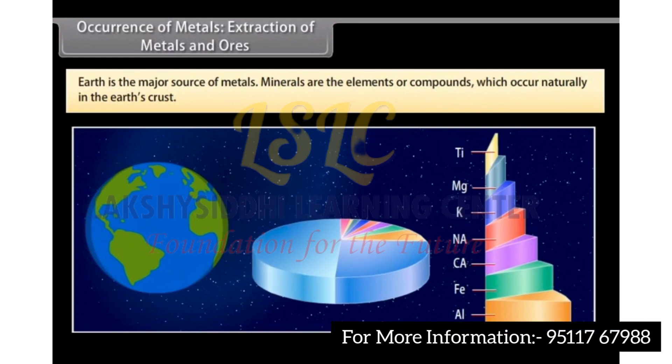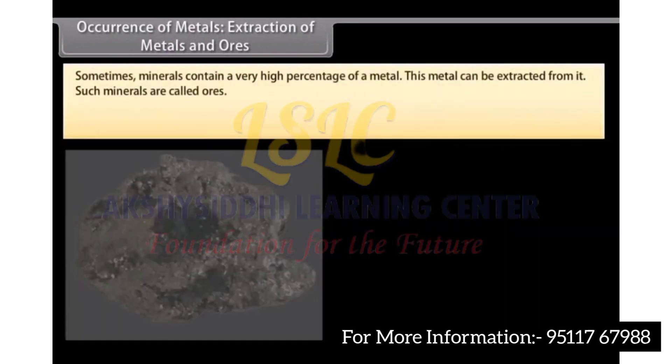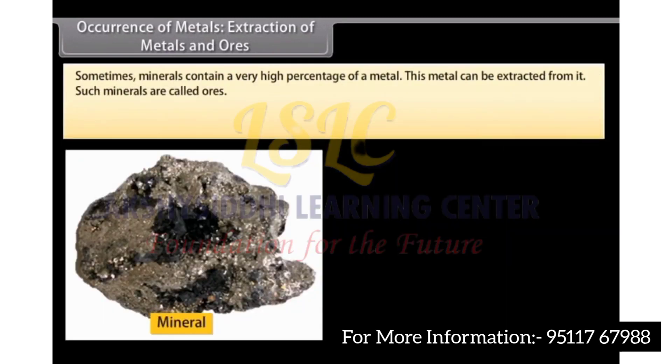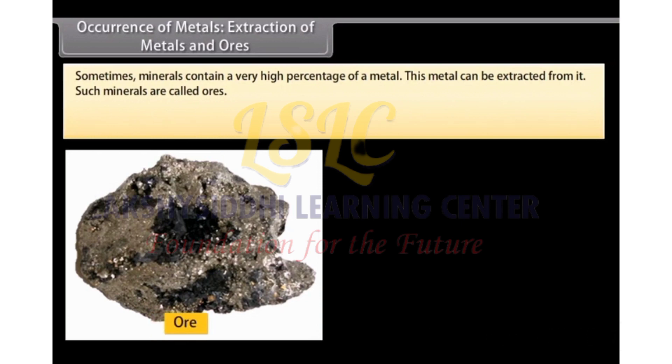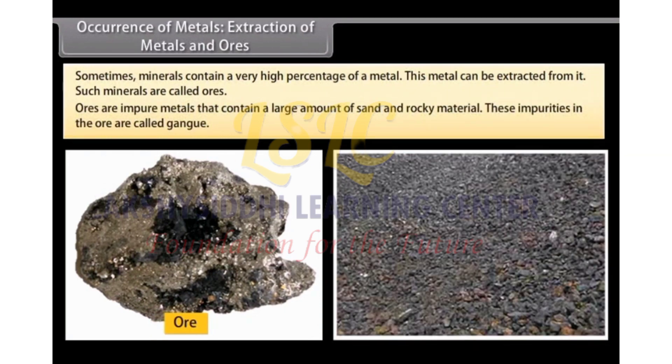Minerals are the elements or compounds which occur naturally in the earth's crust. Sometimes minerals contain a very high percentage of a metal. This metal can be extracted from it. Such minerals are called ores. Ores are impure metals that contain a large amount of sand and rocky material. These impurities in the ore are called gangu.